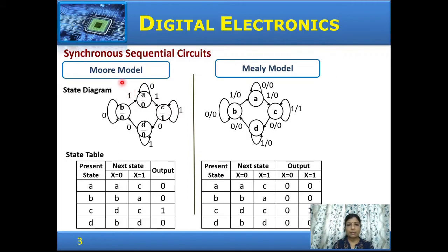Now let us compare Moore and Mealy models using state diagrams and state tables for the same circuit. In the Moore model, there are four states A, B, C, and D. When in state A, the output is 0; for state C, it is 1. When in state A with input 0, it remains in state A; with input 1, it moves to state C, where the output is 1.